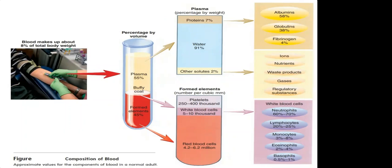Starting with whole blood, the components include red blood cells, white blood cells, and platelets. As shown in the image, the bottom layer is red blood cells, the middle layer is the buffy coat plus platelets, and the top layer is plasma.